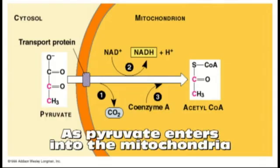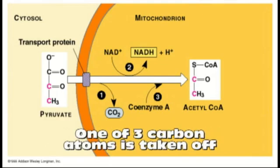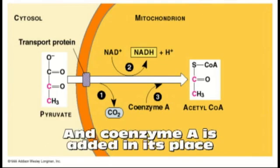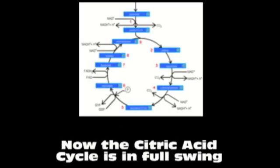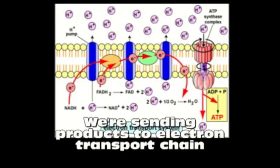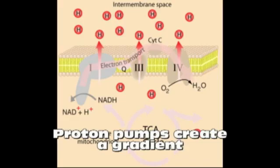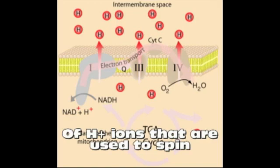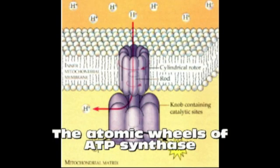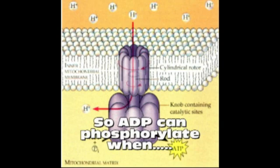As pyruvate enters into mitochondria, one of three carbon atoms is taken off, and coenzyme A is added in its place, then taken off again for oxaloacetate. Now the citric acid cycle is in full swing. We're sending products to the electron transport chain — NADH and FADH2 are the products being made. Proton pumps create a gradient of H+ ions used to spin atomic wheels of ATP synthase, so ADP can then phosphorylate.